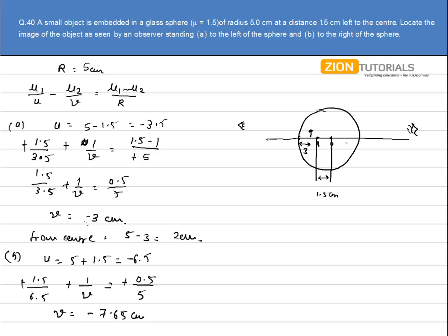So again minus sign shows that the image formed is somewhere over here. So the distance from the center will be equal to 7.65 because 7.65 is this very distance. And this is my center at a distance 5. So this distance will be 7.65 minus 5, that is 2.65 cm. That is the answer.